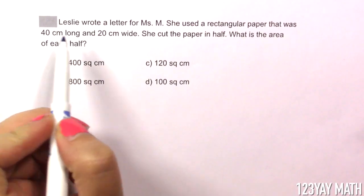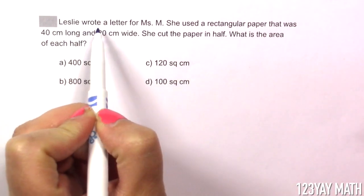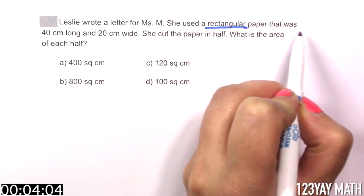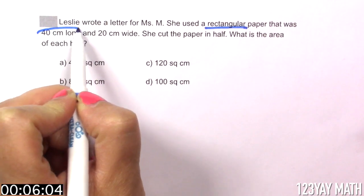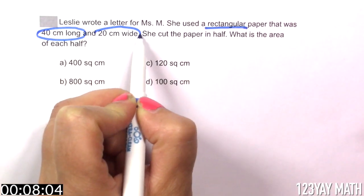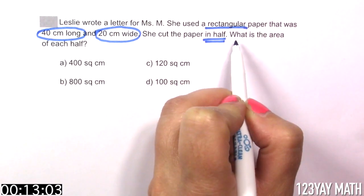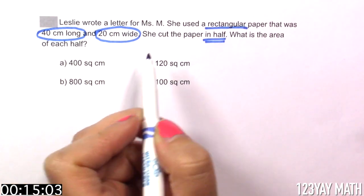Awesome! Let's read this together. Leslie wrote a letter for Miss M. She used a rectangular paper - yes, rectangular is important - and the units, 40 cm long, 20 cm wide. She cut the paper in half. Now the question: What is the area of each half?